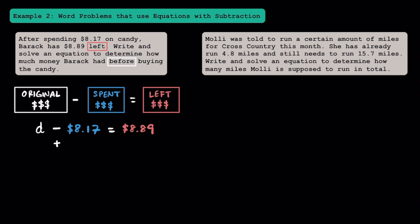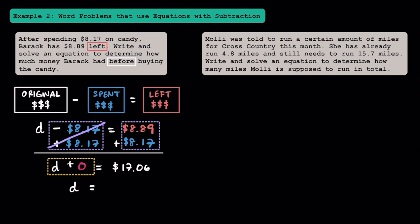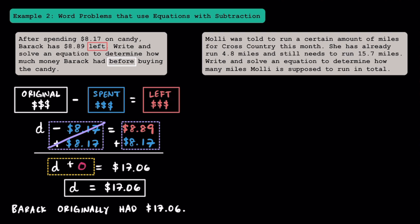To solve this equation, we're going to use the addition property of equality and add $8.17 to both sides. This makes sense because the opposite of spending $8.17 is returning the candy and getting that money back. These opposites create zero and cancel out, so on the left we have D plus zero. On the right, adding $8.89 plus $8.17, we get $17.06. Using the identity property of addition, D is equal to $17.06 — Barack originally had $17.06.